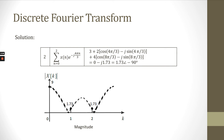We repeat for k equal to 2. For k=2, we have 4π/3 multiplied with n, so the frequency term is 4π/3. We sum over n=0, 1, and 2, and we have the result as the magnitude and phase answer for k equal to 2.